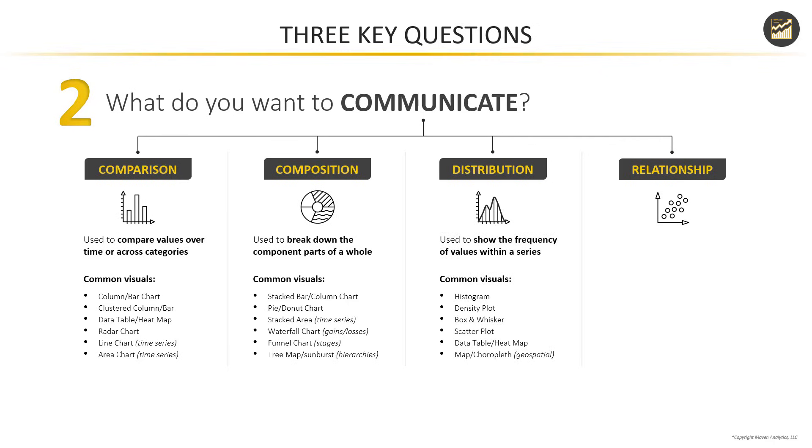Distribution is about showing the frequency of values within a series, and histograms are really far and away the most common and popular type of visual to show distributions. If you've ever seen a bell curve or normal distribution, that's a histogram at work. You might use things like density plots or box and whisker charts here as well.